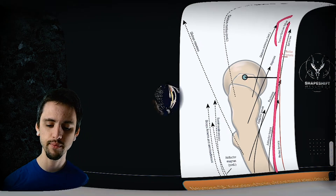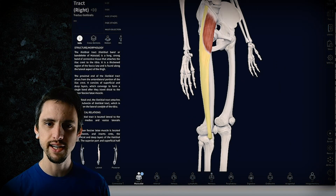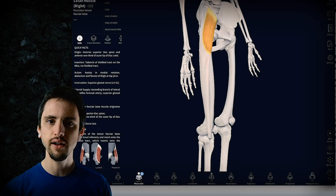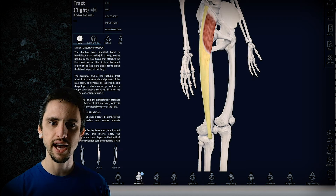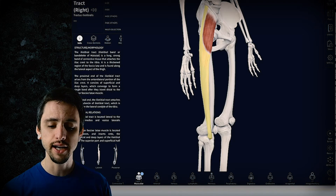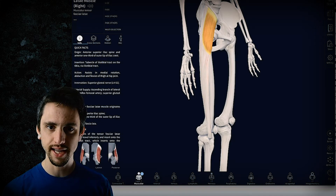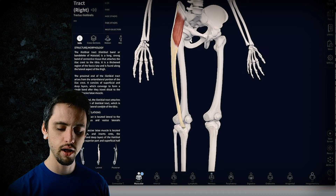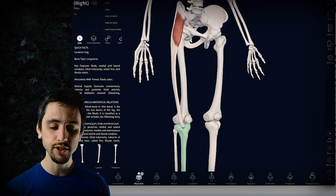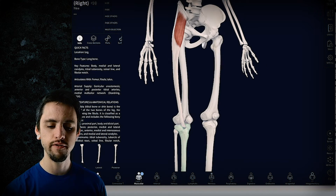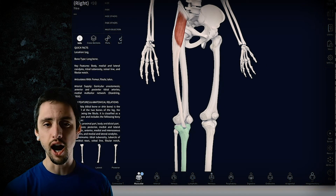Here's the TFL — the yellow part is the iliotibial band, the IT band, and this part here is the actual tensor fasciae latae muscle. The TFL basically pulls on the IT band, which is essentially a big long tendon. It connects from your hip on the outside all the way down past the knee joint. So the TFL is a really interesting muscle — I won't talk about what it does at the knee today, just what it does at the hip.